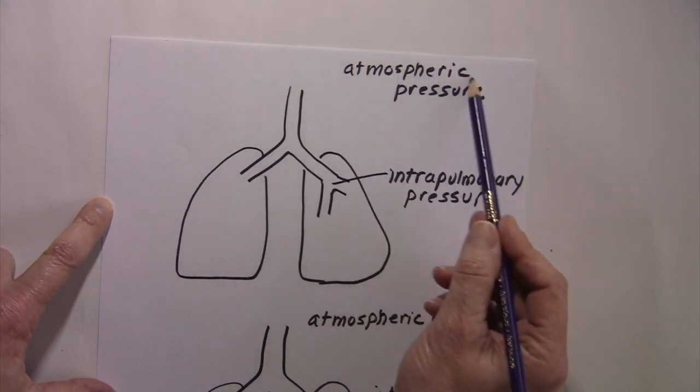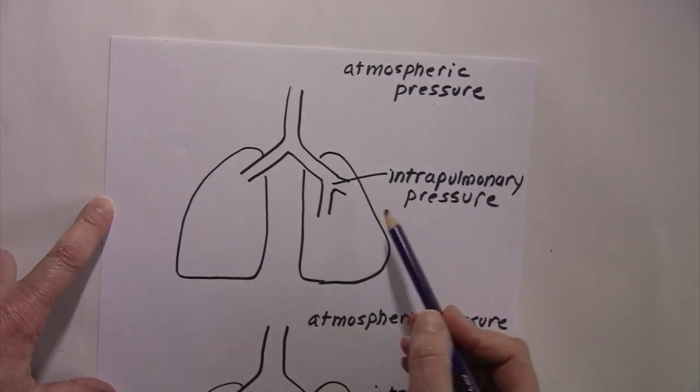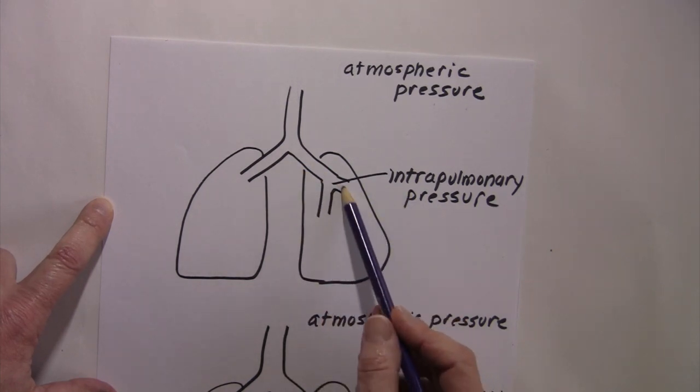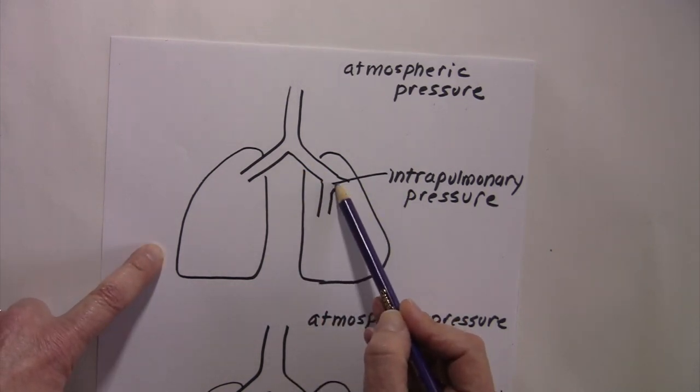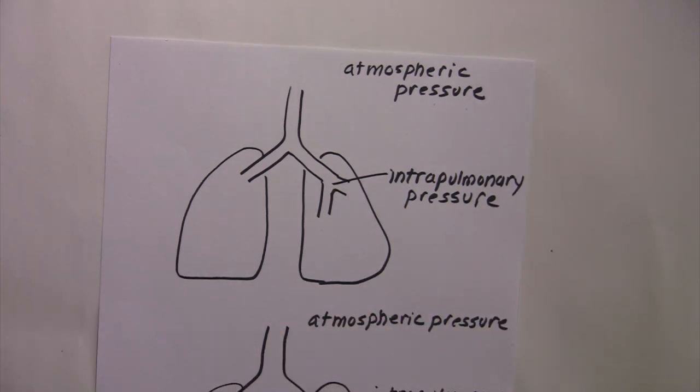The pressure of the air outside of our body in our environment is called the atmospheric pressure. And the pressure filling our airway, filling that conducting airway, and inside of the lungs specifically is what we're looking at now. That's called the intrapulmonary pressure or the pressure inside of the lungs.